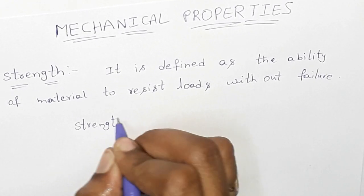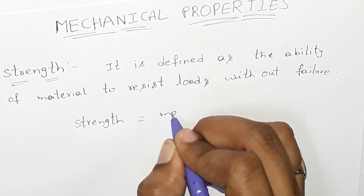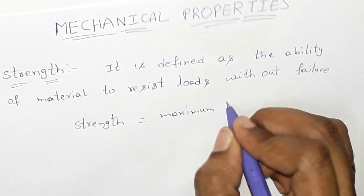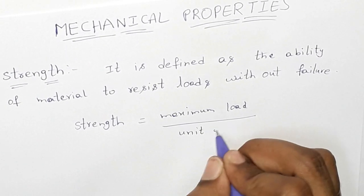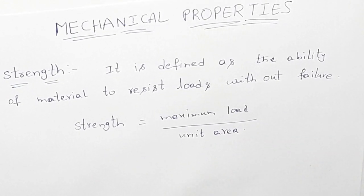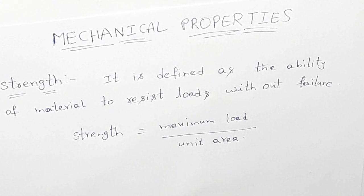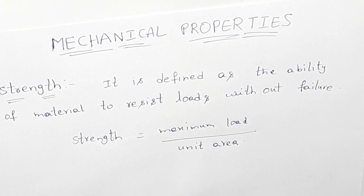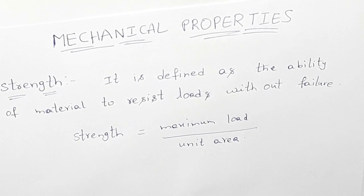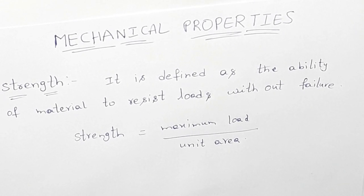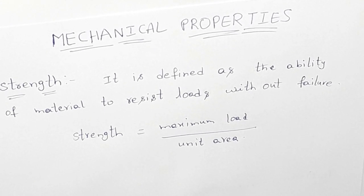Strength is equal to maximum load per unit area. Strength is defined as the ability of a material to resist loads without failure. The mathematical formula is: strength equals maximum load per unit area.